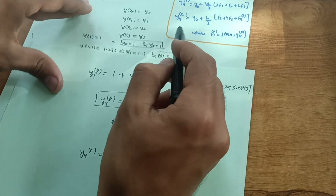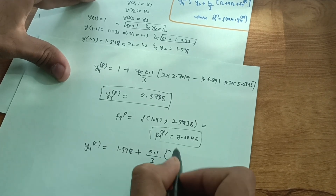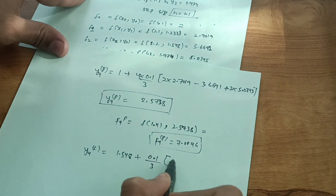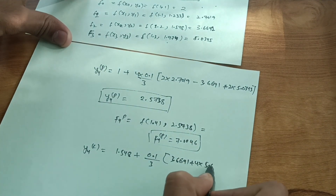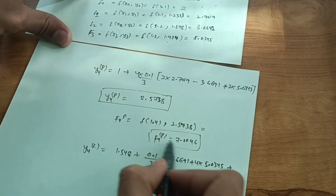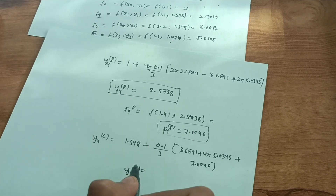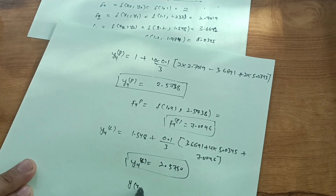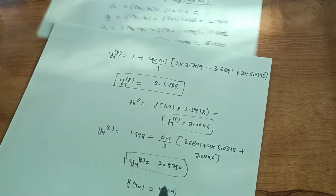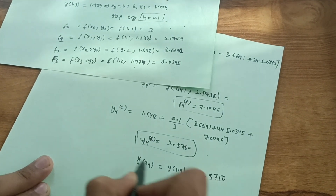Now apply the corrector formula: y4(corrector) = y2 + (h/3)(f2 + 4f3 + f4(predictor)) = 1.548 + (0.1/3) × (3.6691 + 4 × 5.0345 + 7.0046). This gives y4(corrector) ≈ 2.5750. Therefore y(1.4) ≈ 2.5750, which is the required answer.